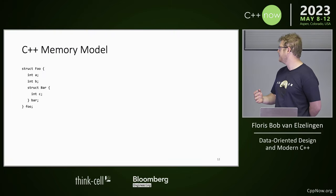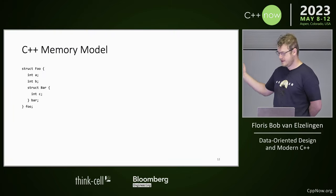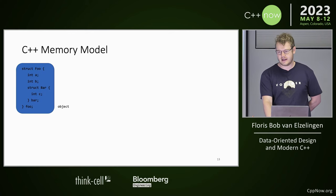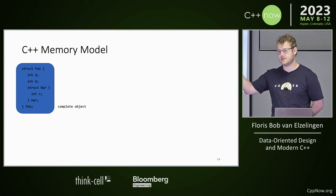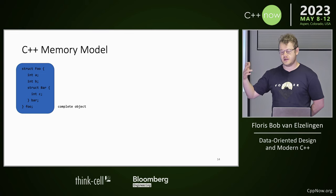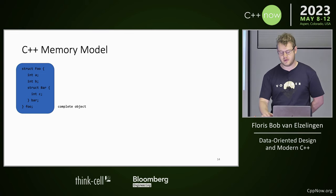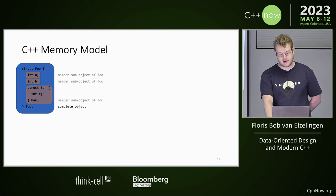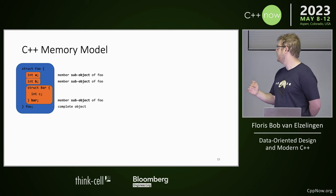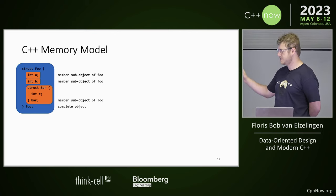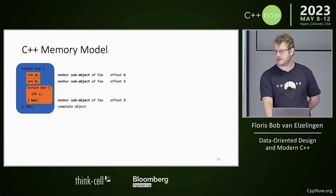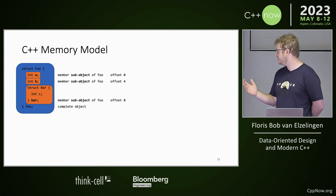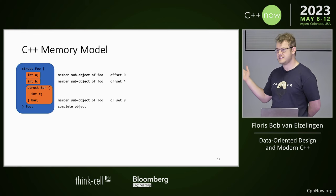First, we're going to take a look at the memory model. We have a struct foo here. If we take a look at the memory model, this is called a complete object — it's a struct that's not in any other structure class, it's in a function on the stack, maybe a global variable. Then we take a look at our member variables — these are member sub-objects of foo. We automatically get an offset. It's not necessarily the way it has to be.